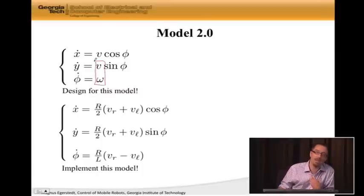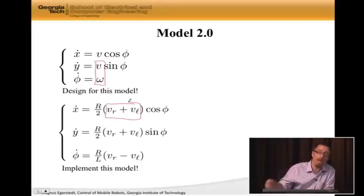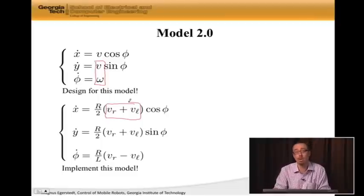And now, here we have V and omega. These are the control inputs we're going to design for. But here, V sub R and V sub L are the actual control parameters that we have. So we somehow need to map them together.